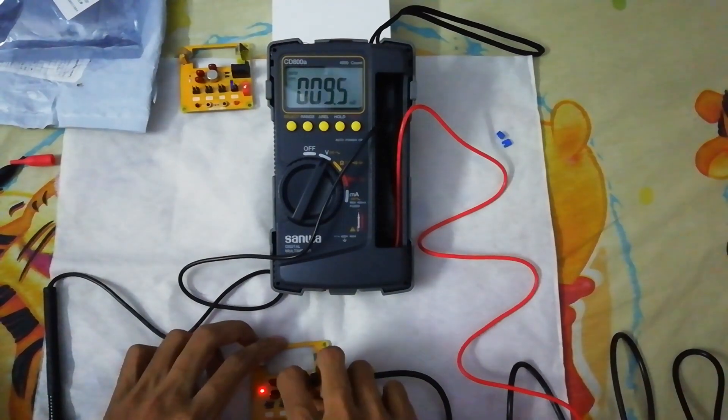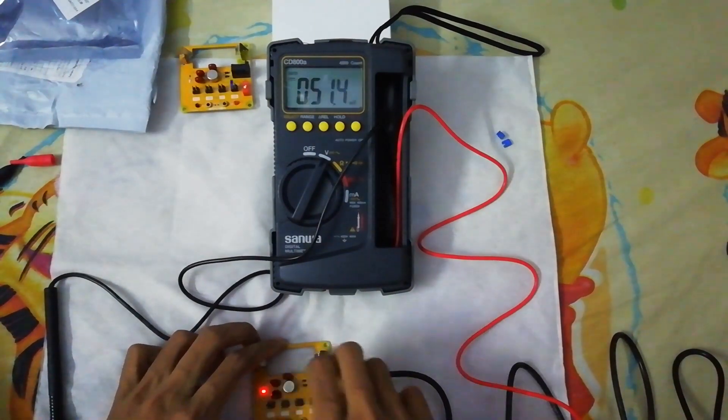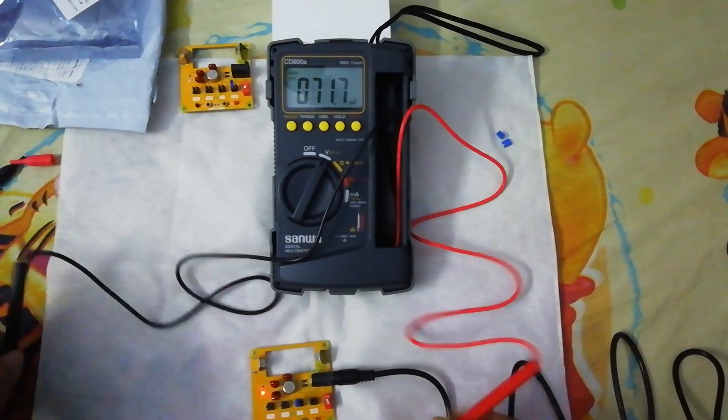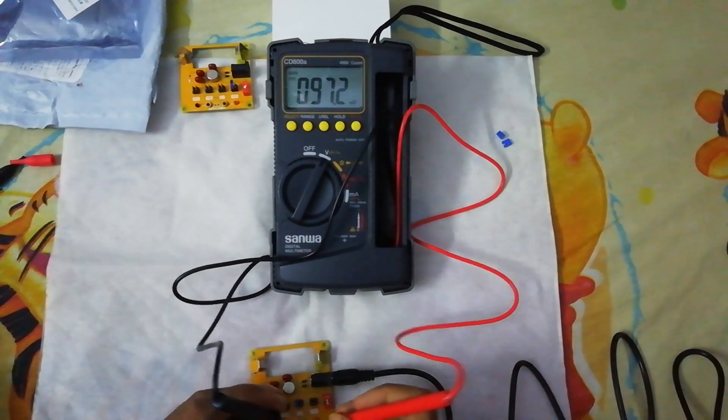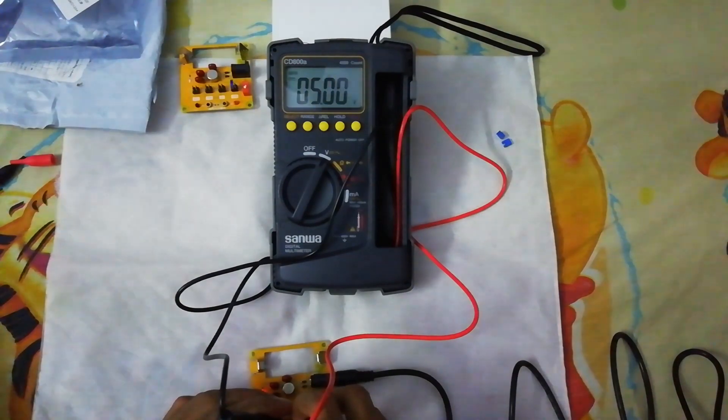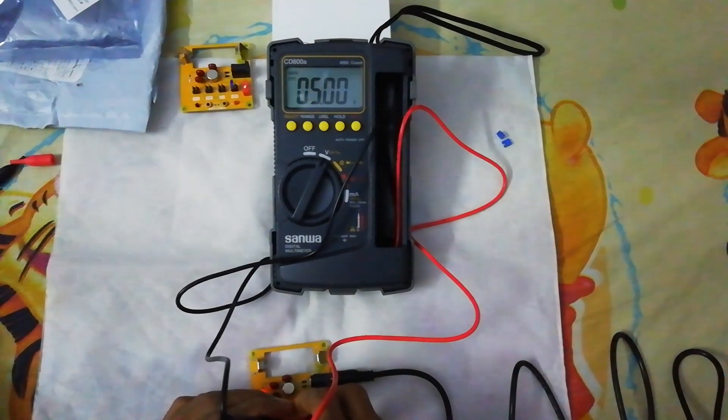Now for 5 volts, this will show yes exactly 5.00. The other one showed 5.01 which was 0.01 off from the accurate number.